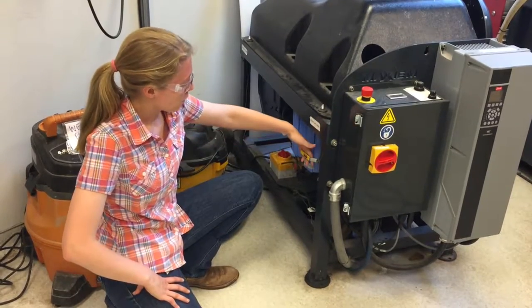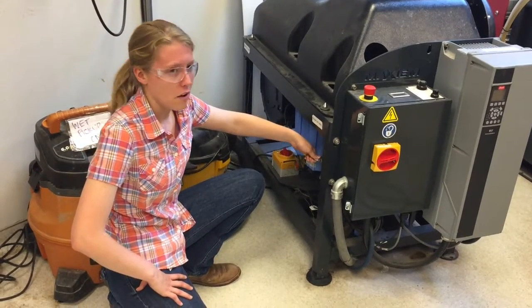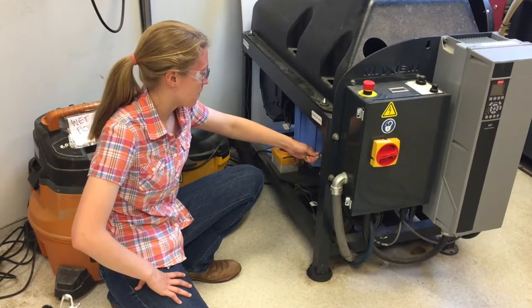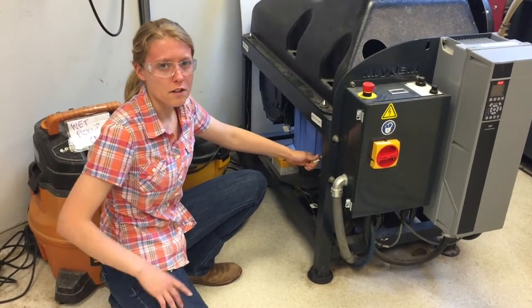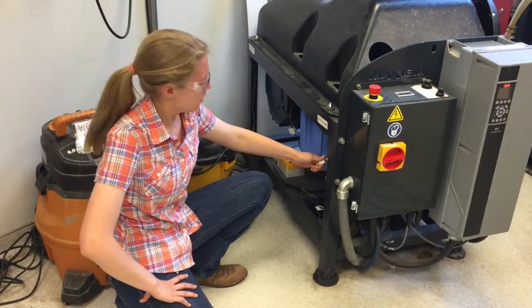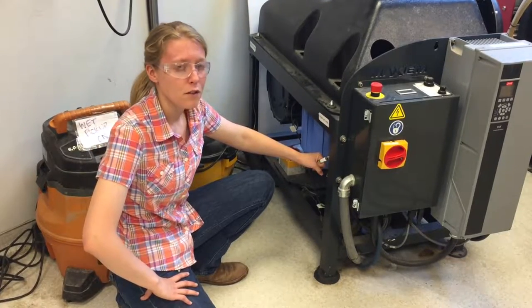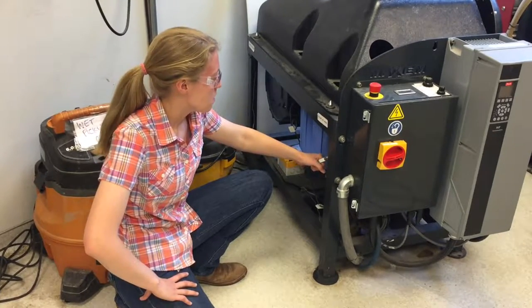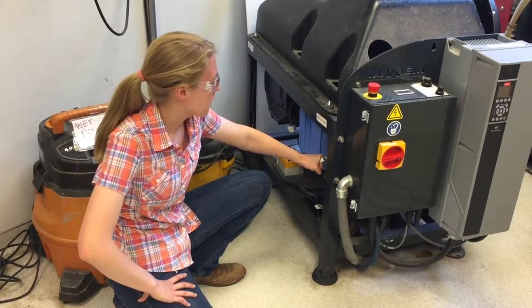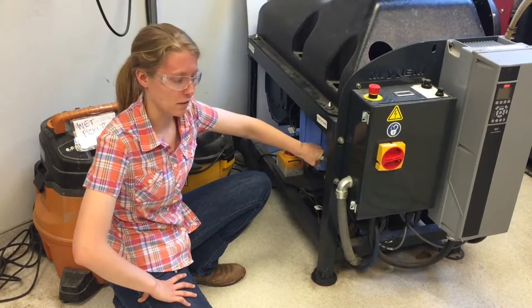Next, turn this yellow lever counterclockwise to the 7 o'clock position. This allows cool water to run through the machine. Let this run for about 30 seconds and then turn it clockwise back to the 9 o'clock position.